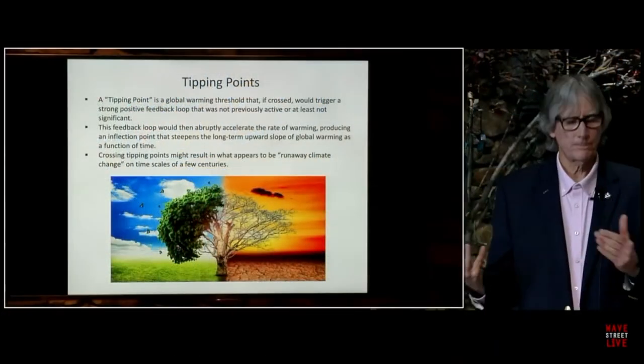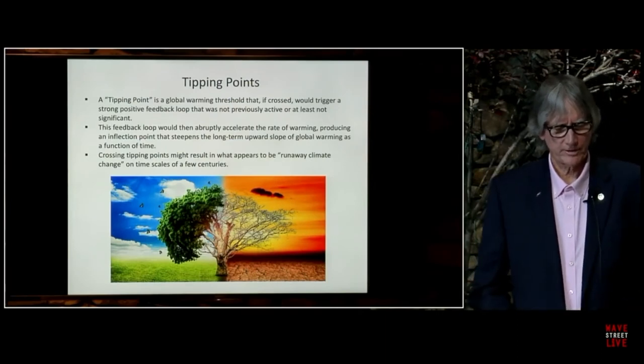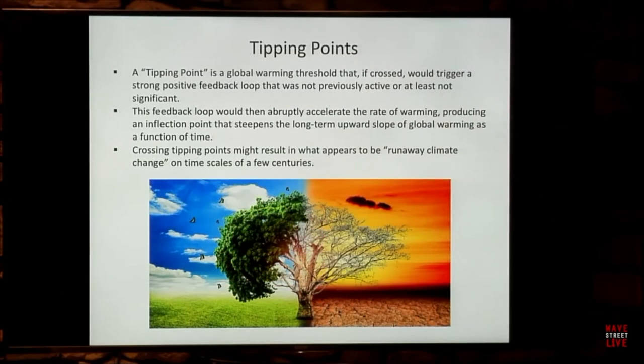A tipping point is a global warming threshold that, if crossed, would trigger a strong positive feedback loop not previously active or significant. This feedback loop would then abruptly accelerate the rate of warming, producing an inflection point that steepens the long-term upward trend. Crossing tipping points might result in what appears to be runaway climate change on timescales of a few centuries. There's pretty much nothing we humans can do to the Earth that it can't recover from — but it could take tens to hundreds of millions of years. As I often say, the Earth is going to be just fine; it's we humans that are going to suffer.